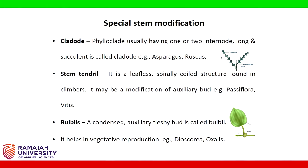Examples of cladode: Asparagus, Ruscus. Stem tendril: it is a leafless, spirally coiled structure found in climbers. It may be a modification of the axillary bud. Examples: Passiflora, Vitis.